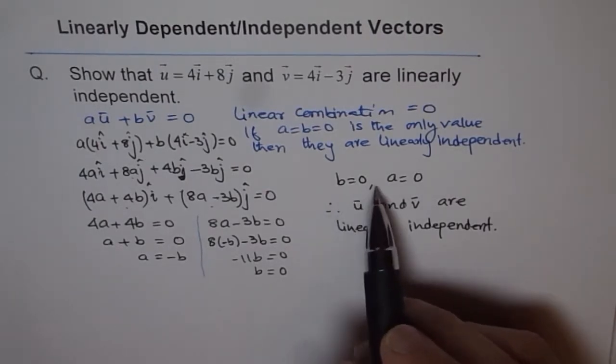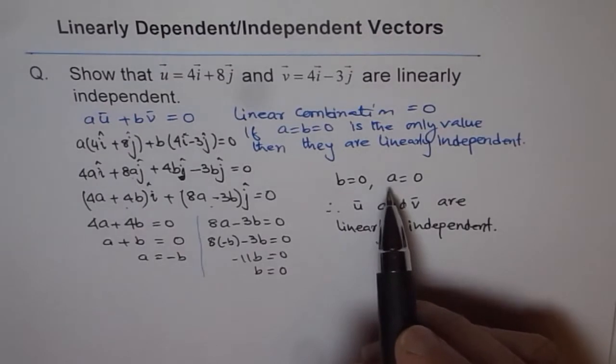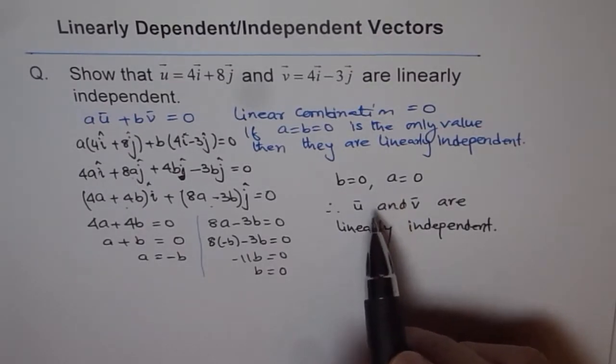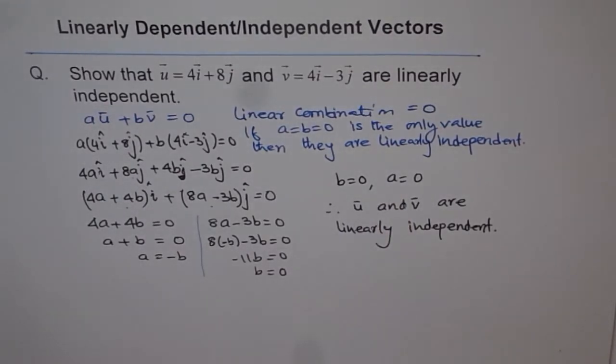If we would have found some other value of either one of them, except for 0, then they would have been dependent.